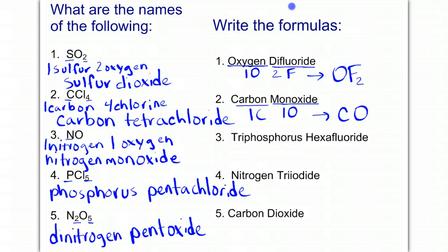In number three, we have three phosphorus, and we have six fluorides. So that formula is going to be P3F6.